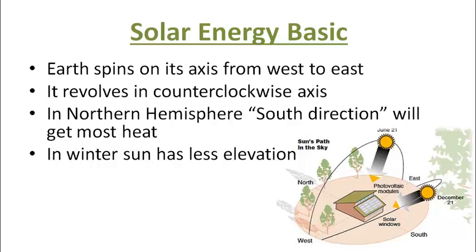The earth spins on its axis from west to east and revolves in a counterclockwise direction. So when it revolves in a counterclockwise direction, the consequence is that in the northern hemisphere the southern direction will get the most heat in a day. That means whichever surface is facing south will receive more sunlight. To maximize sun use, place the longest side of your house facing south.